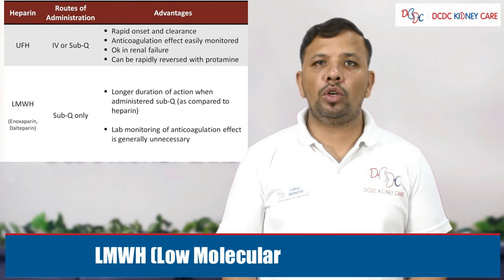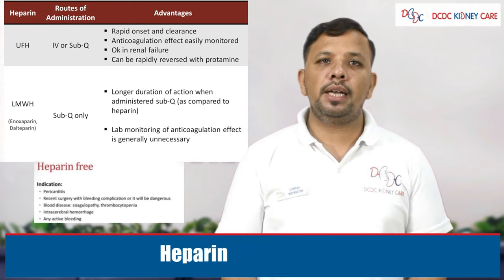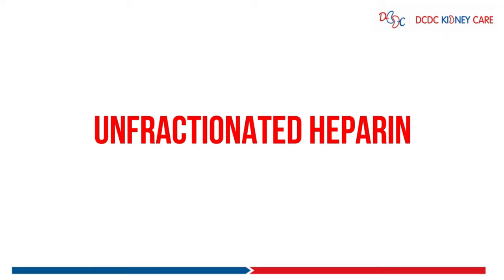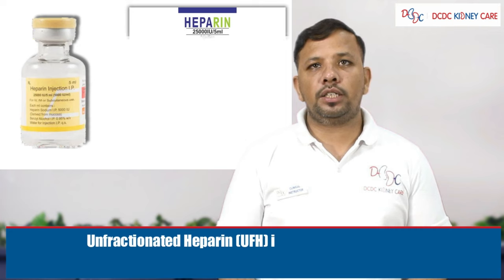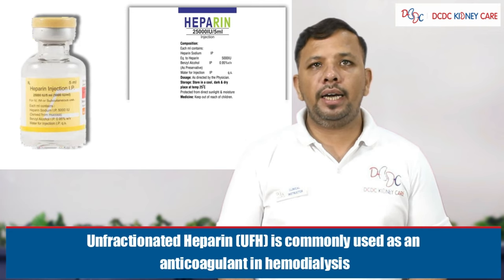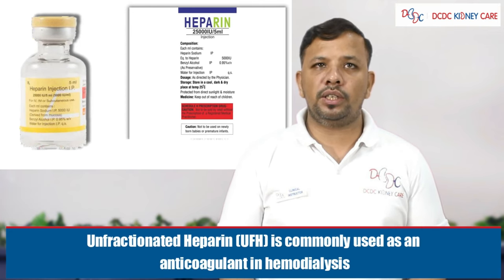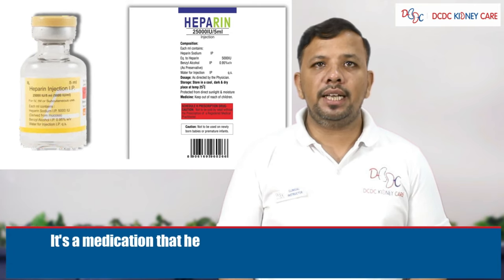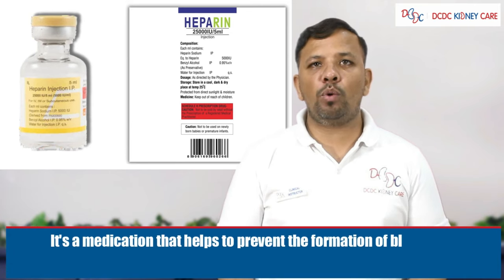Now we will talk about the various anticoagulant agents used in hemodialysis. The first one is unfractionated heparin, the second is low molecular weight heparin, and the third is heparin-free dialysis. First of all, we will talk about unfractionated heparin.